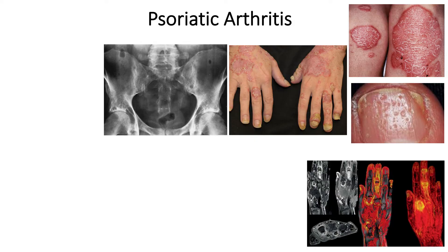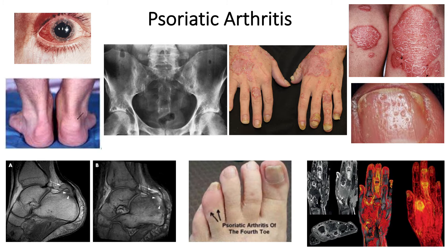Psoriatic arthritis affects the joints and skin, but also many other organs and comorbidities. As we think about treatment, we have to think about the patient in front of us and what their predominant symptomatology is.